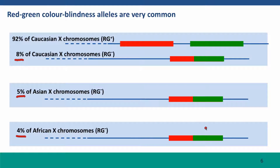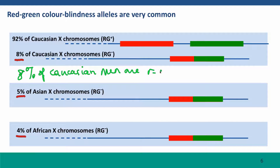This means that eight percent of Caucasian men are red-green colorblind, because they only have one X chromosome, and that X chromosome happened to be one of the ones that only has a single opsin gene on it. Similarly, five percent of Asian males and four percent of African males are colorblind.